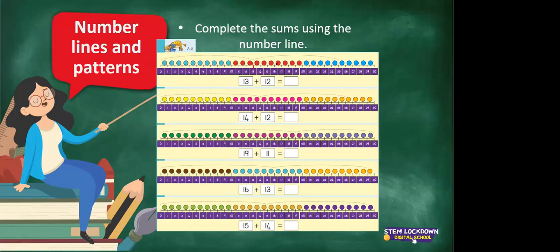Here is 13. Now we are going to add 12 on. Let's count: 1, 2, 3, 4, 5, 6, 7, 8, 9, 10, 11, 12. And we land on 25, and you are writing the answer down. So now we know on the number line we make a long skip — the frog is leaping from 13 and then we add 12 on. So the answer is 25. We know that 13 plus 12 equals 25.